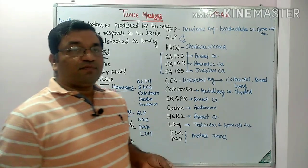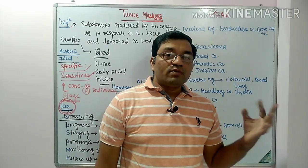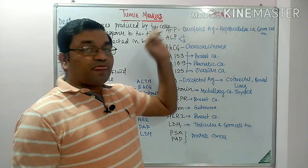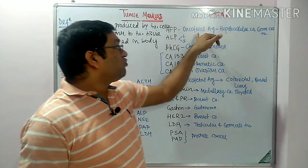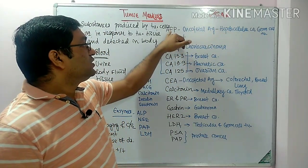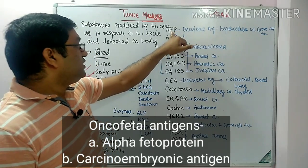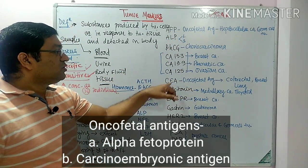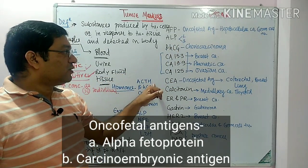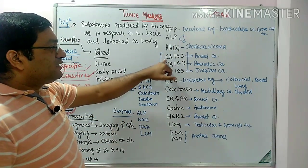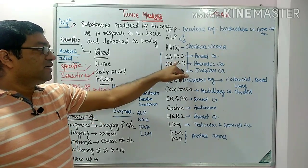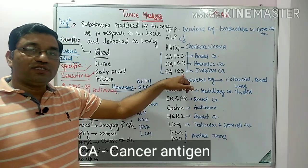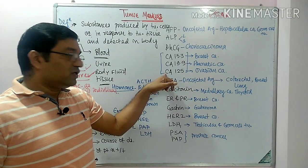Now coming to the classification of tumor markers. Tumor markers can be classified into: oncofetal antigens — which include AFP (alpha-fetoprotein) and carcinoembryonic antigen; carbohydrate antigen or cancer antigen — which includes CA153, CA199, and CA125; various hormones such as ACTH, HCG, calcitonin, insulin, and serotonin; and various enzymes.